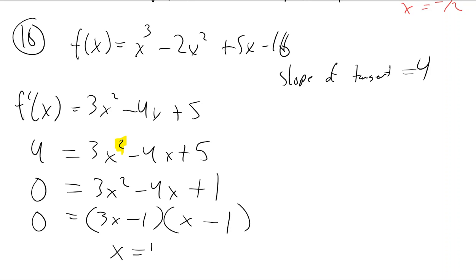So it looks like when x is 1, we get a slope of 4, and when x is 1 third, we get a slope of 4.